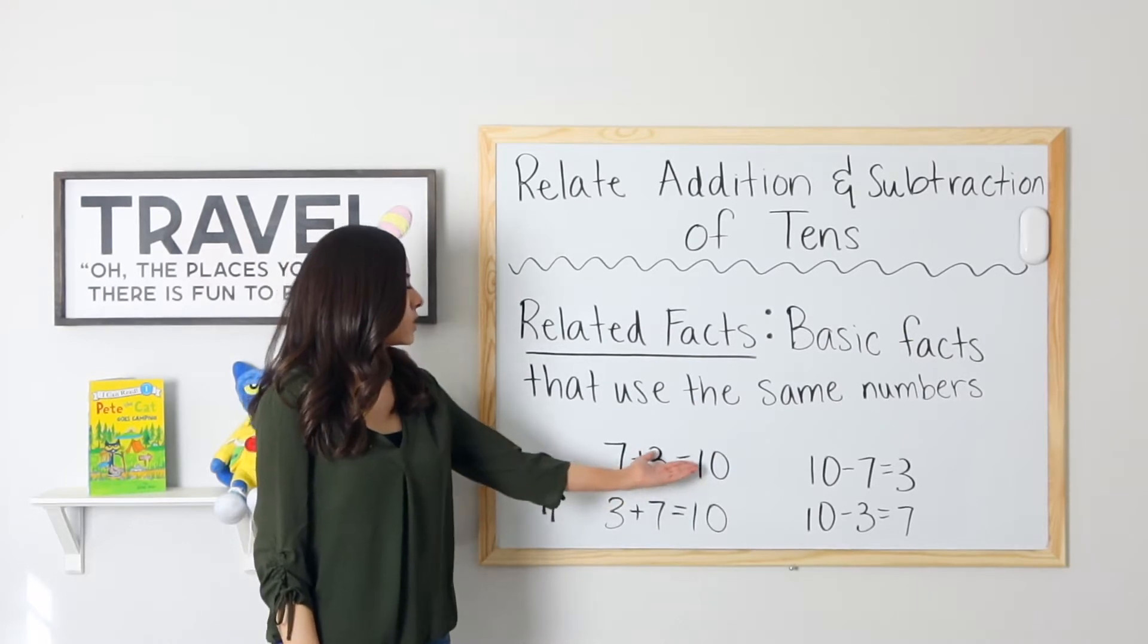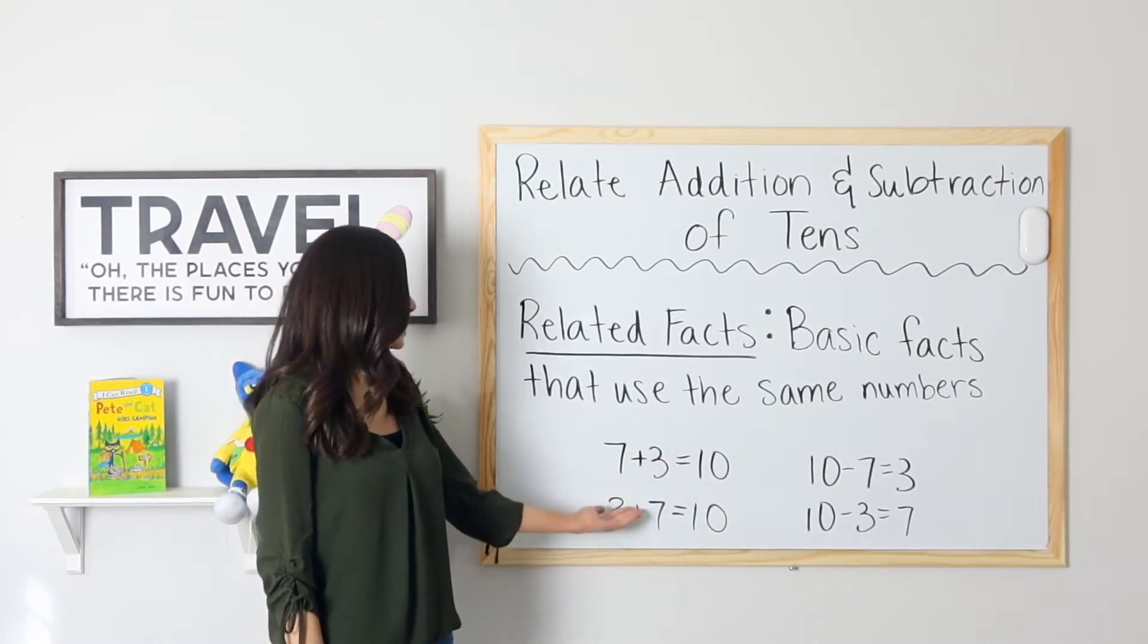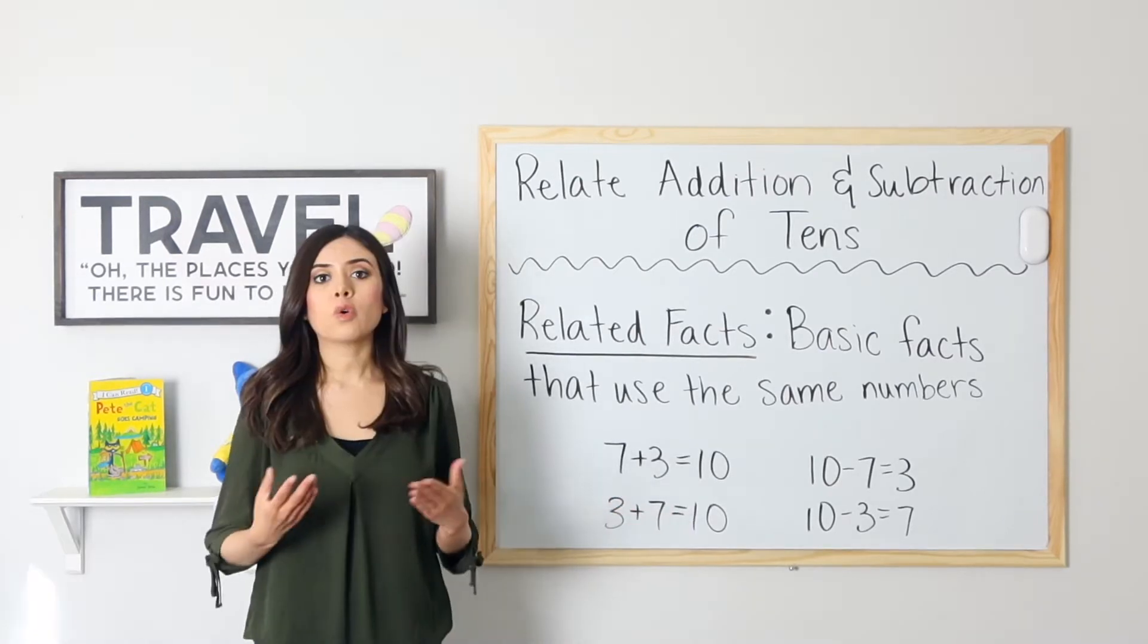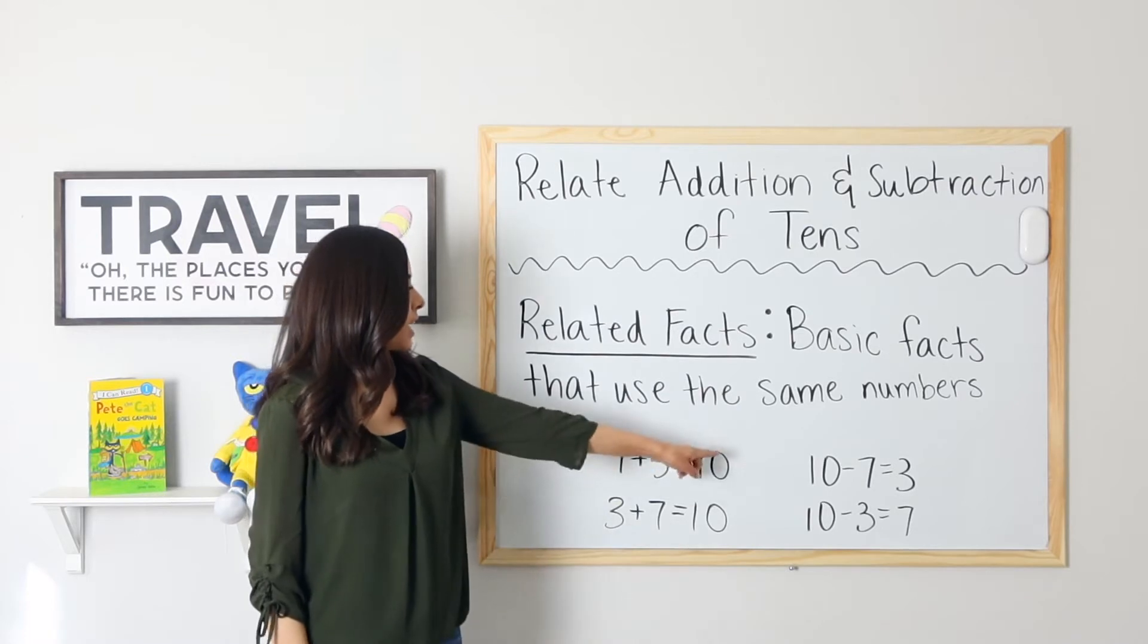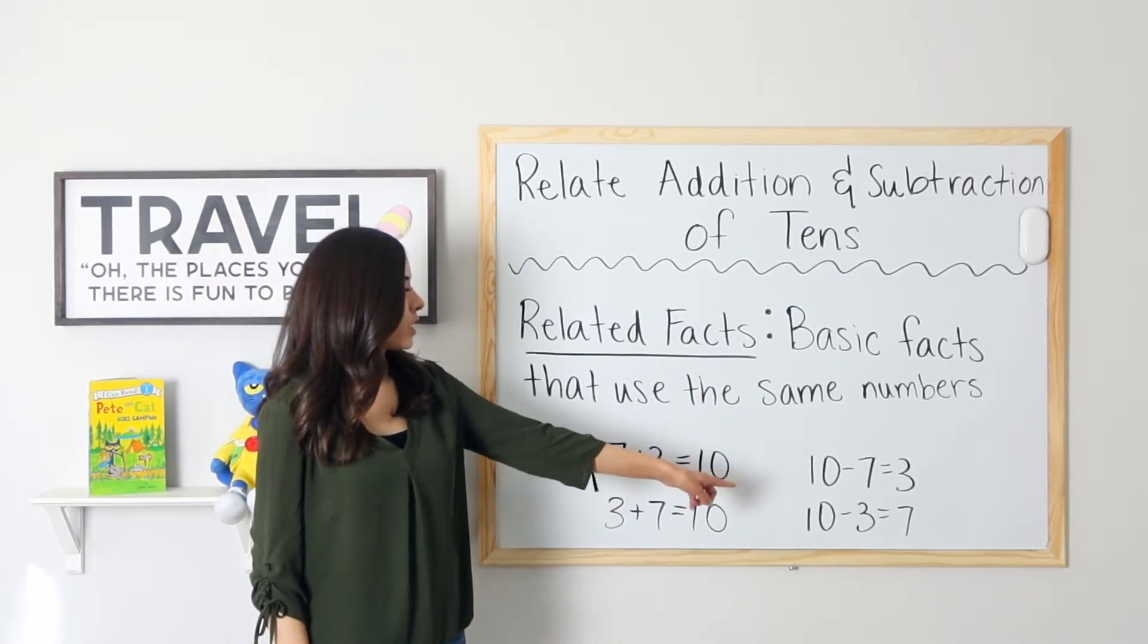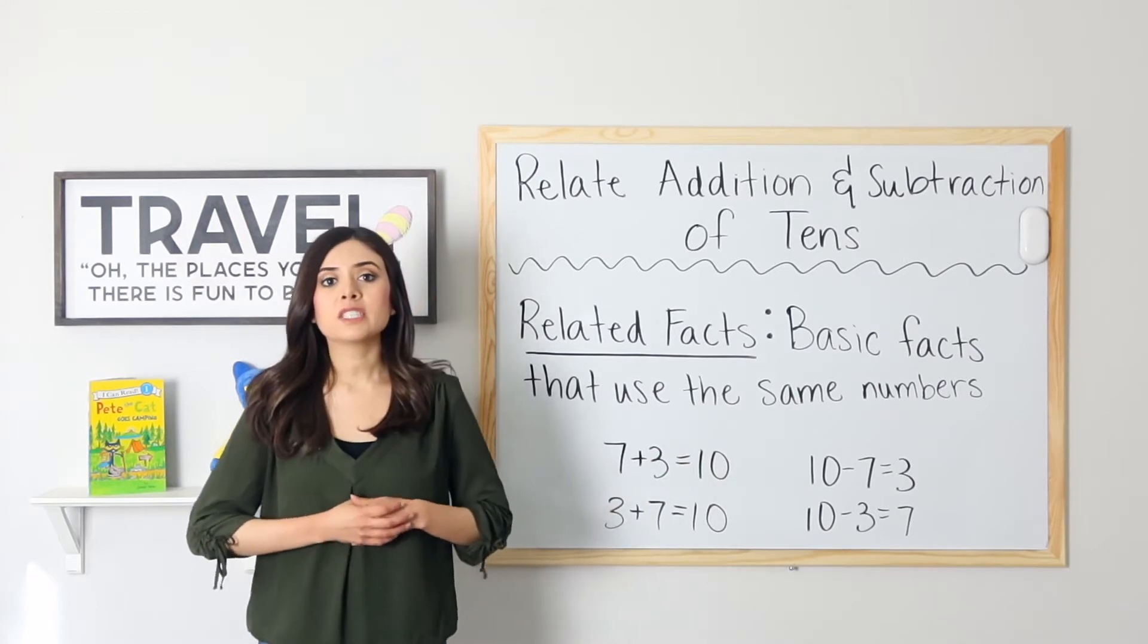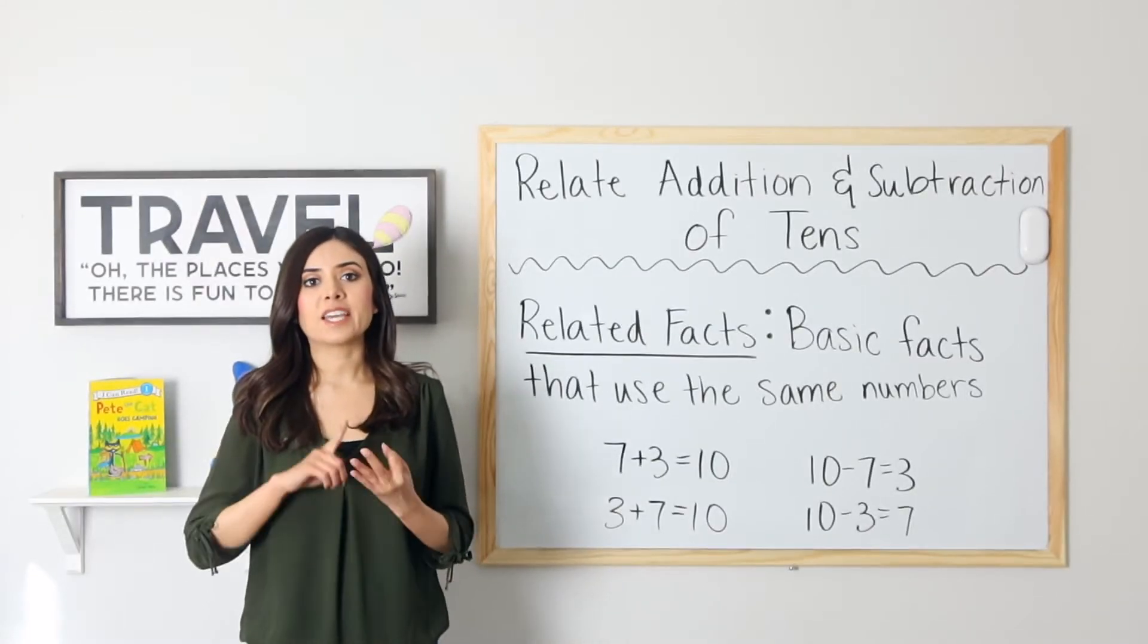7 plus 3 equals 10. I can also say 3 plus 7 equals 10. Or I can change this to subtraction facts by saying 10 minus 7 equals 3 and 10 minus 3 equals 7. In all of these facts, I use the same numbers 3, 7, and 10.